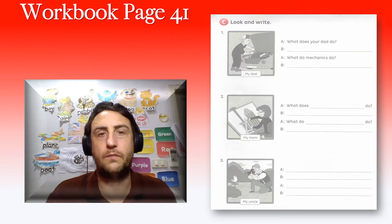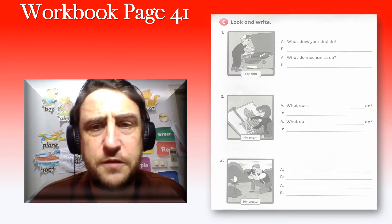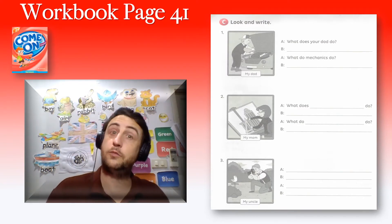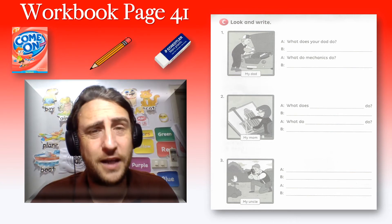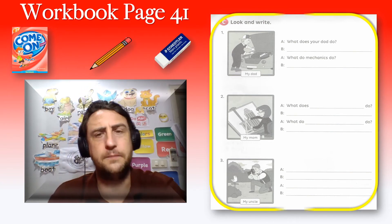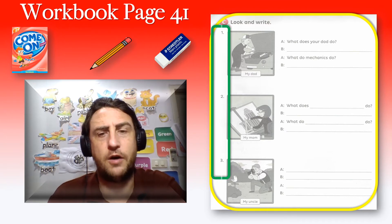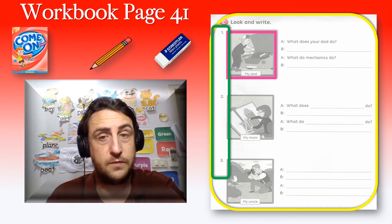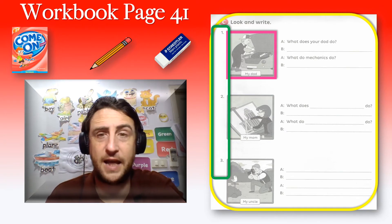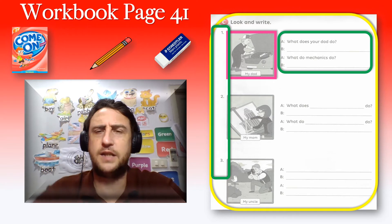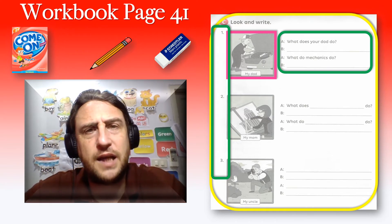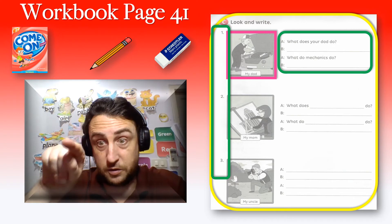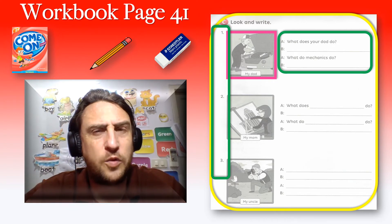This is workbook page 41, part C. You will need your workbook, your pencil, and your eraser. There are three questions, three parts: one, two and three. Look at the picture — this is my dad. There is a question: what does your dad do?